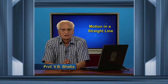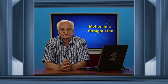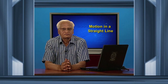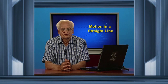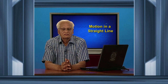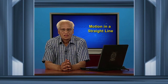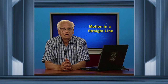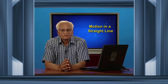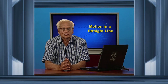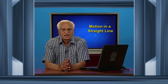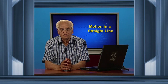Today we will concentrate on graphs: the distance-time graph, the velocity-time graph, and the acceleration-time graph. We shall also see how a good graph should be drawn. We start with displacement. Displacement is the difference between the final position vector of a body and the initial position vector of a body.